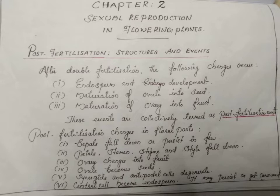During post-fertilization events, there are some changes in the floral parts. Sepals fall down or persist in a few cases. Petals, stamen, stigma, and style fall down. The flower's male part — the stamen — and the female parts — style and stigma — fall down.